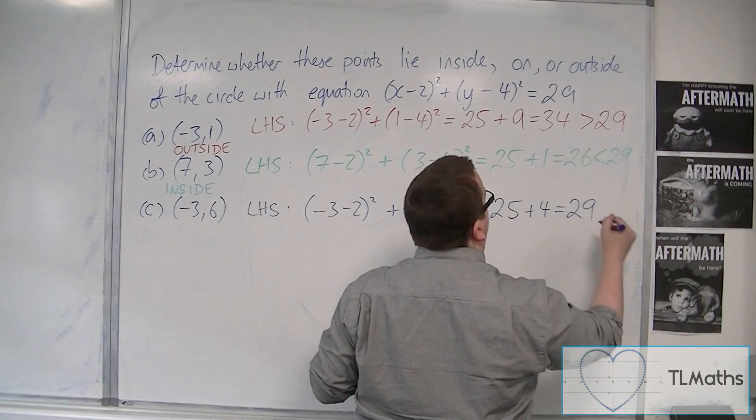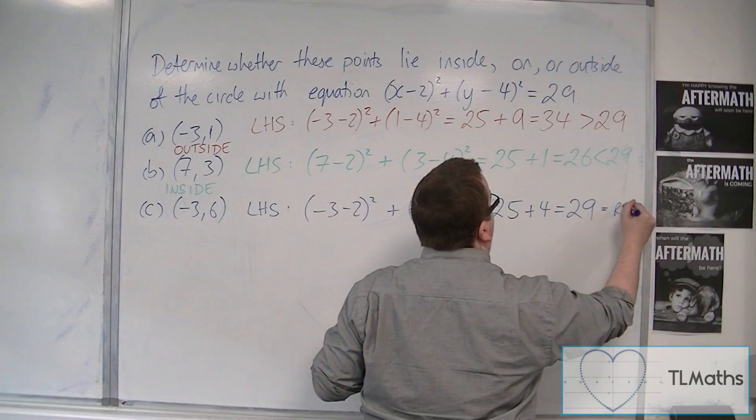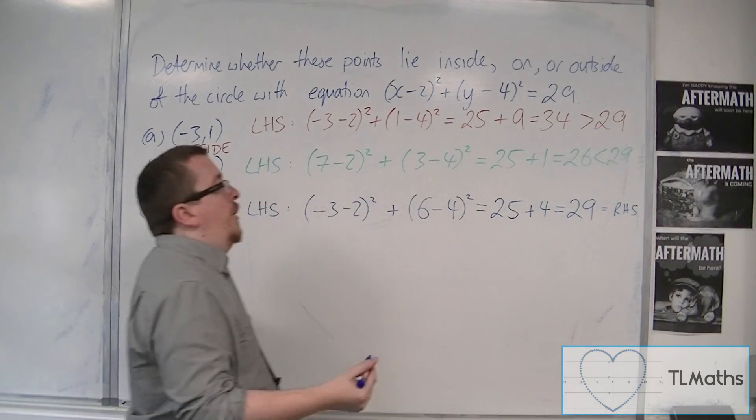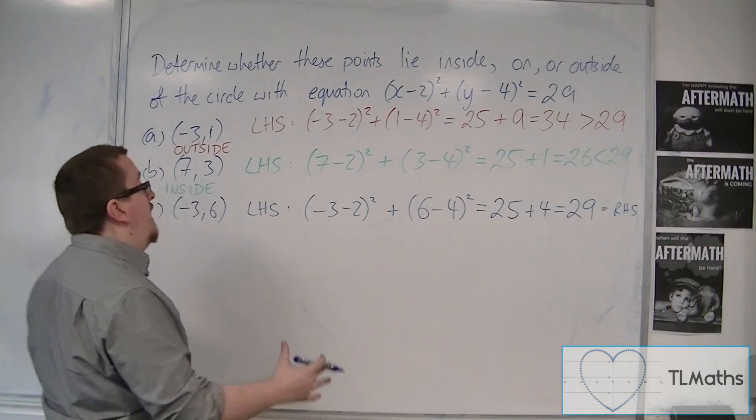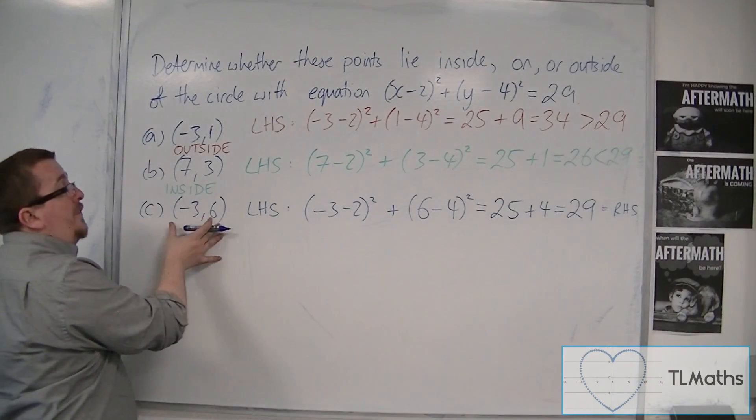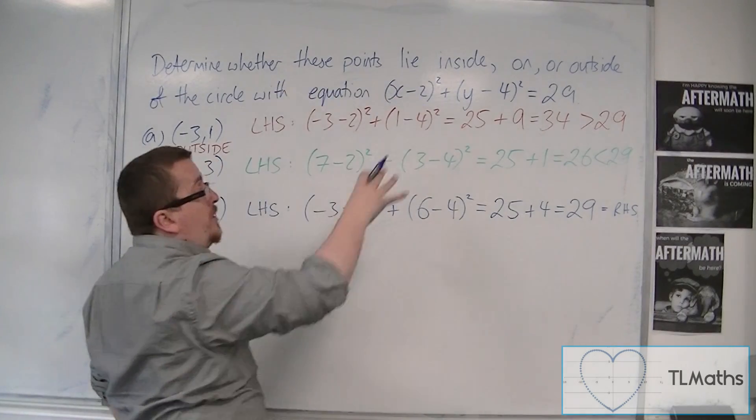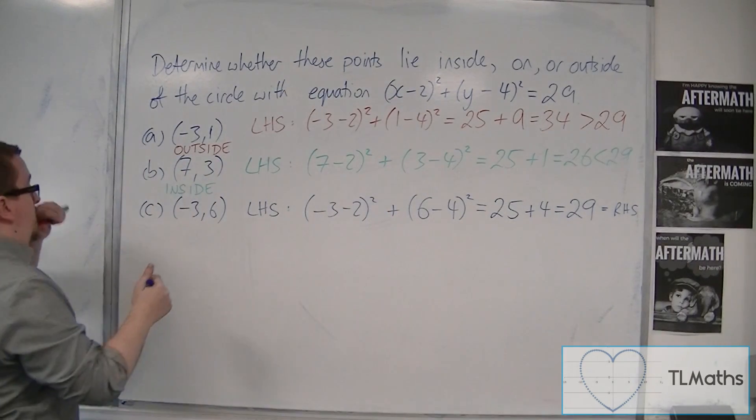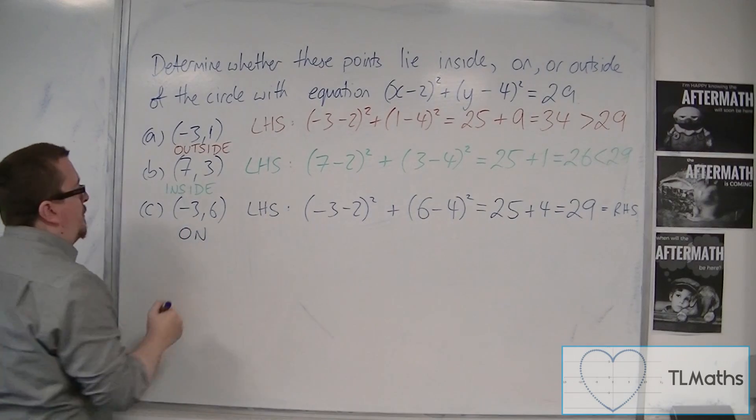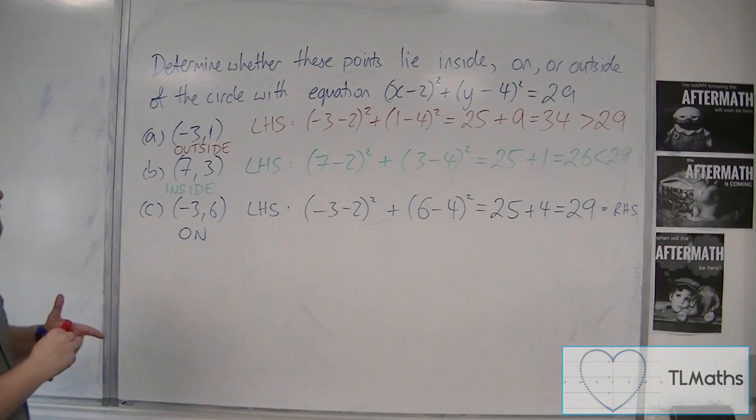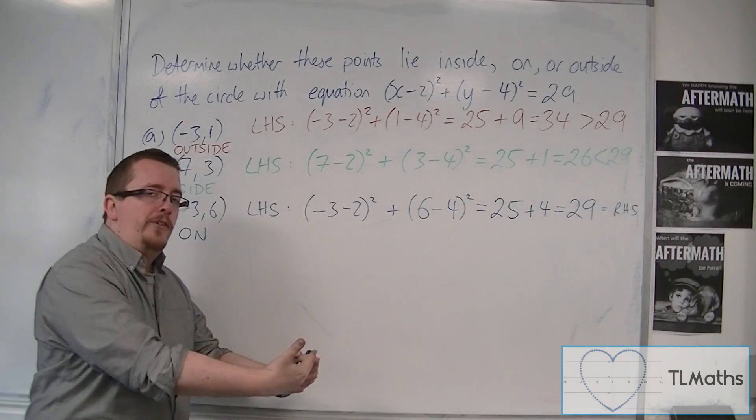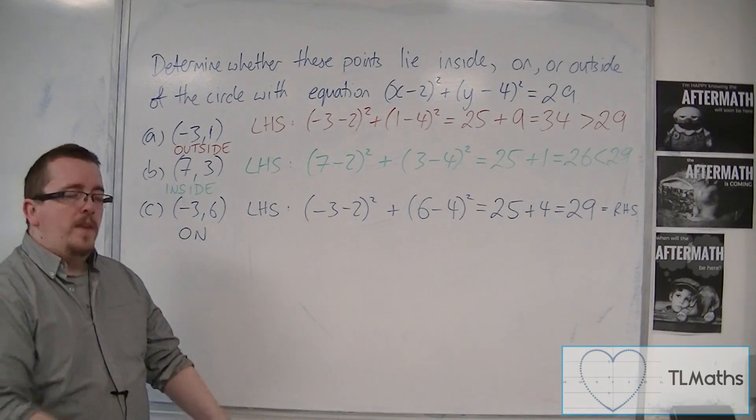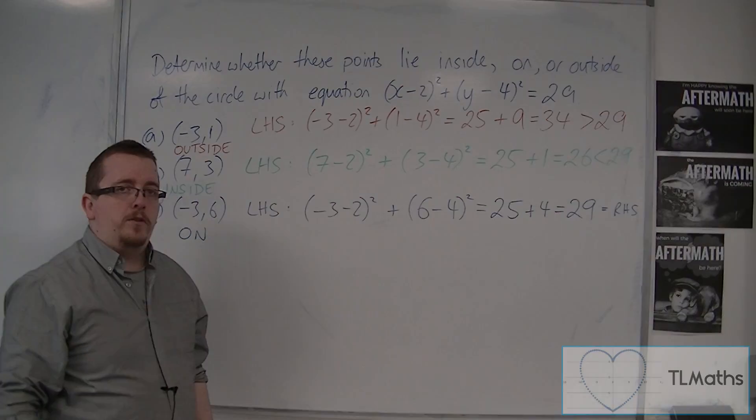Which is equal to the right-hand side. So because we get exactly the same value, in other words, if I substitute the coordinates in, the equation is satisfied. These coordinates must be on the circle. So greater than is outside, less than is inside, and equal to is on the circle.